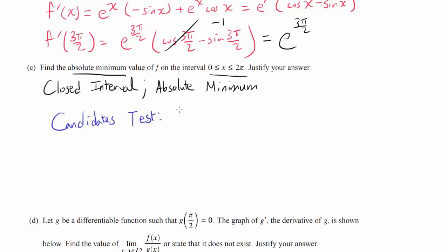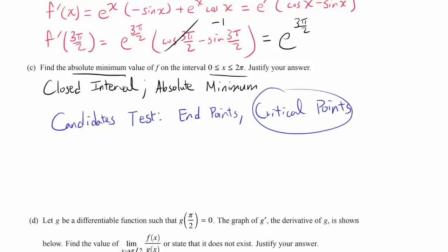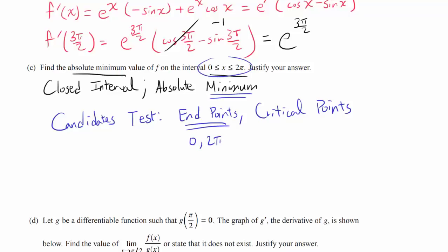In the Candidate's Test, we look at the endpoints and the critical points. The critical points are where f prime is 0 or undefined. For each of these points, we evaluate the function value, and the smallest will be the absolute minimum. The endpoints are 0 and 2 pi.